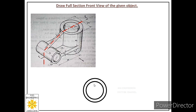Whenever we draw any circle in a drawing, we must show the two center lines — the horizontal center line and the vertical center line. Remember, center lines are chain thin lines.